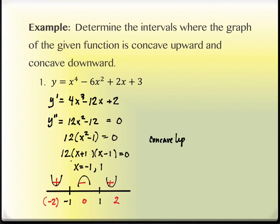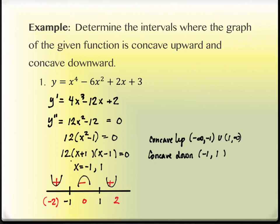Now let's list our intervals of concavity. Concave up: negative infinity to negative 1, and then 1 to infinity. Concave down: negative 1 to 1. Interval notation is what they typically will use. The only difference from Section 3.3 is that we're taking a second derivative before we do the same process we did last time.